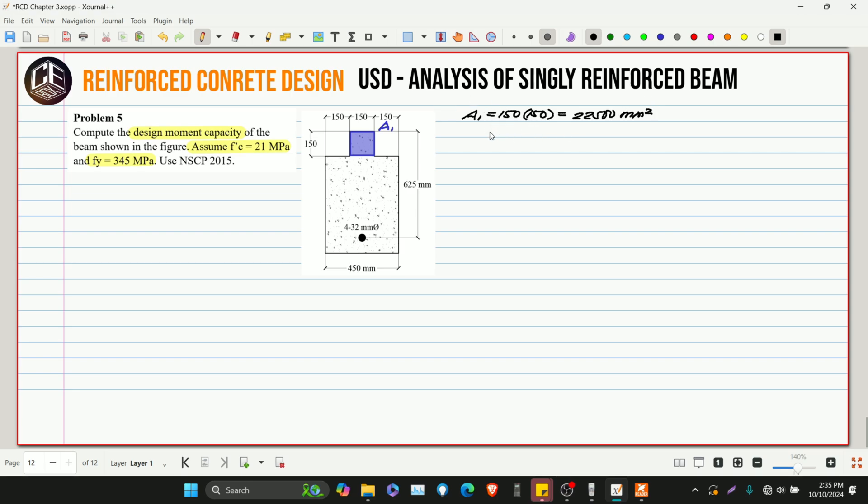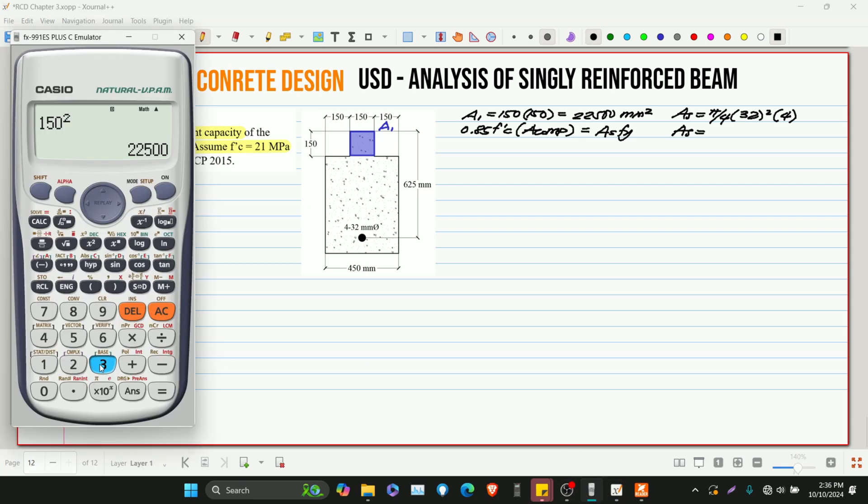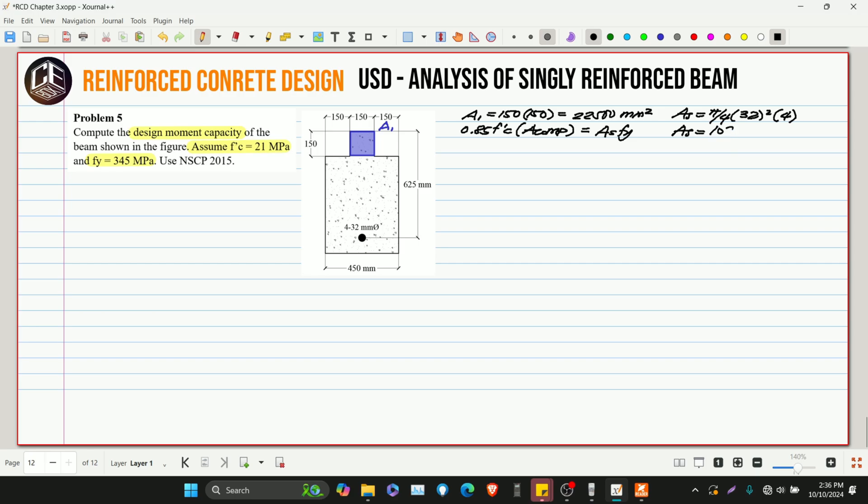Then let's solve the required area for compression. That is equivalent to 0.85 F'c multiplied by area 1 equals AS. Assume that the steel will yield, then FS is equivalent to FY. So solve for AS. This is pi over 4 multiplied by 32 squared multiplied by 4.